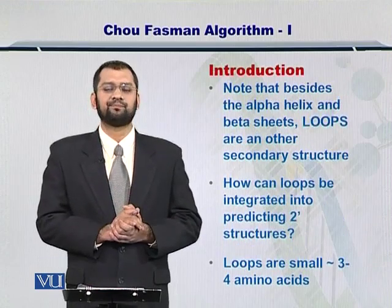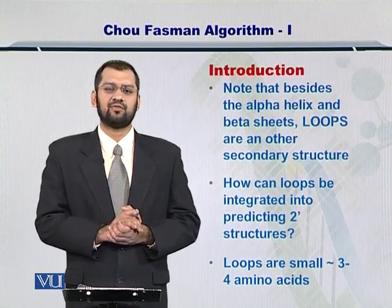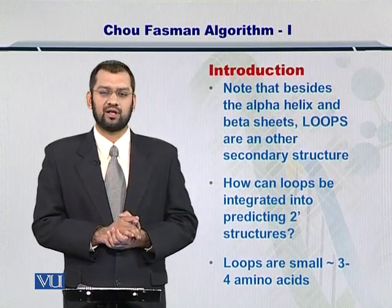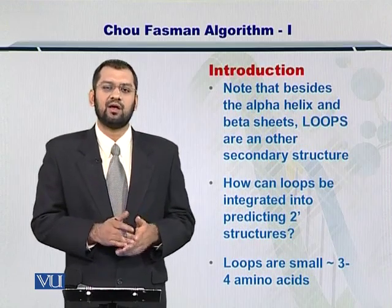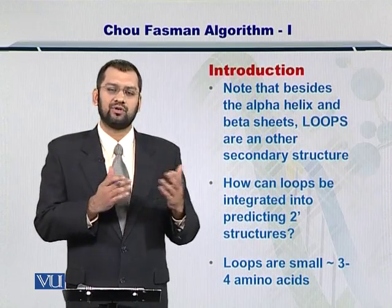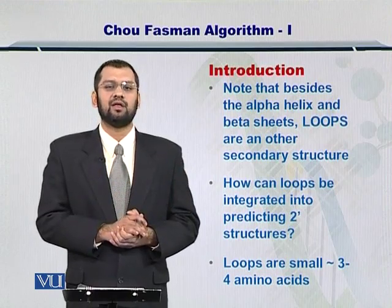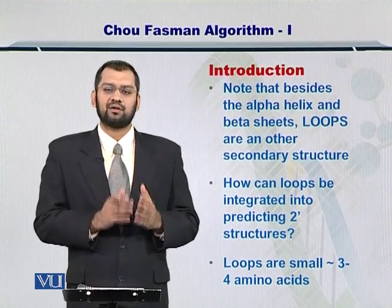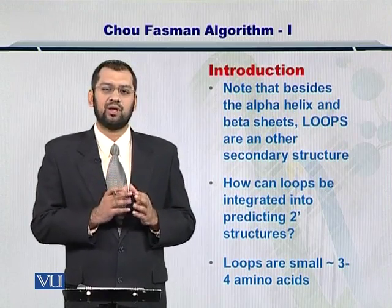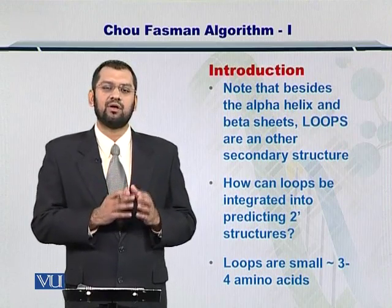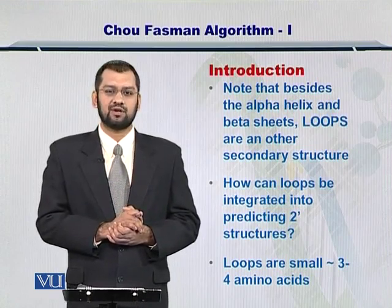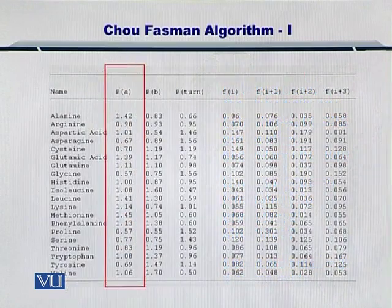Besides the alpha helices and beta sheets, there are loops and turns as well. We need to see how to predict the loops and turns in the protein structure. Remember that loops and turns are very important for the functional and active sites in a protein structure. So let's start the Chou-Fasman algorithm.